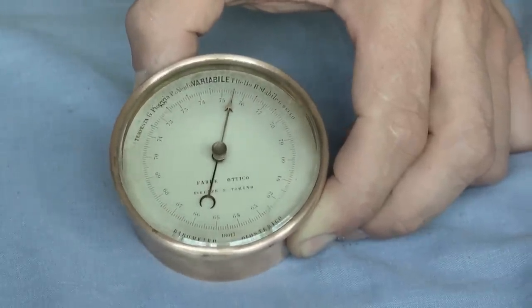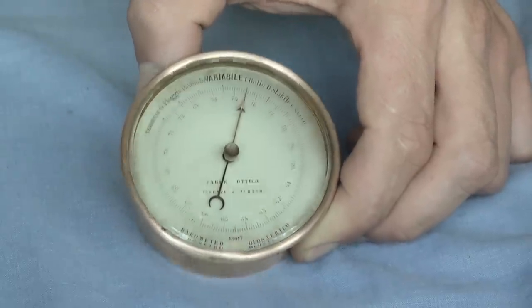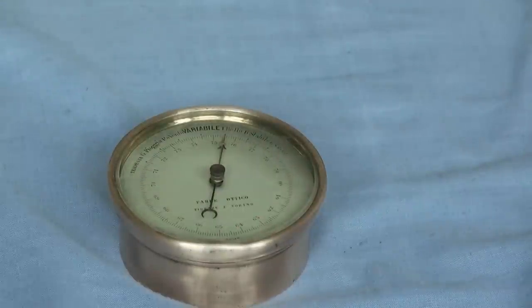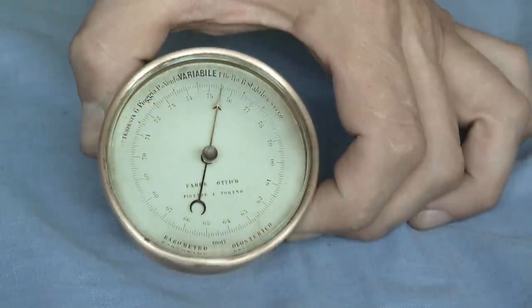This is an aneroid barometer I bought off eBay. It's a little French barometer, probably from around 1900, basically for the Italian market. It's marked in centimeters of mercury, which is an unusual measurement.